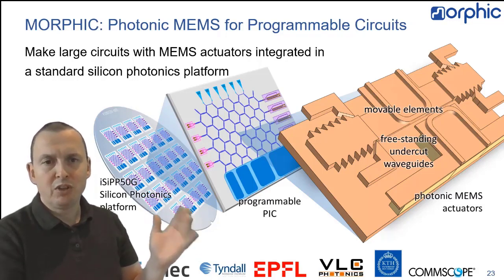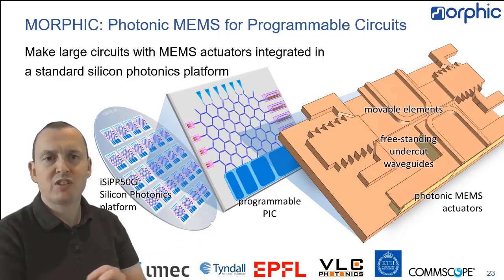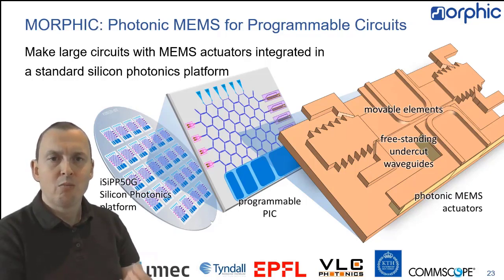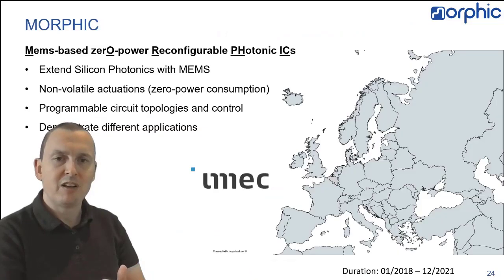So, that's where Morphic comes in. The Morphic project doesn't want to do just MEMS. It wants to do MEMS in an established silicon photonics platform with modulators, with photo detectors, with everything built in, without affecting the performance of that platform. And so, for this we use the IMEC IC50G platform.